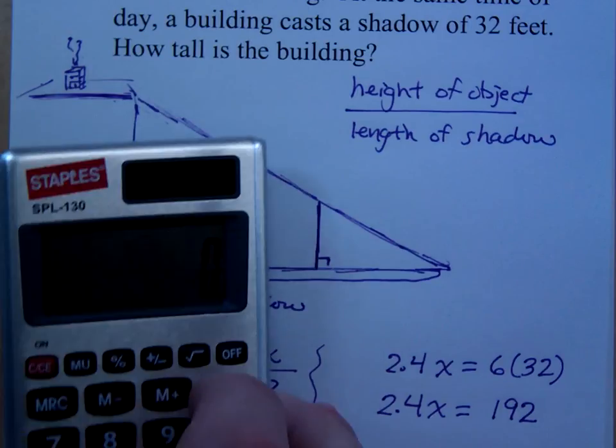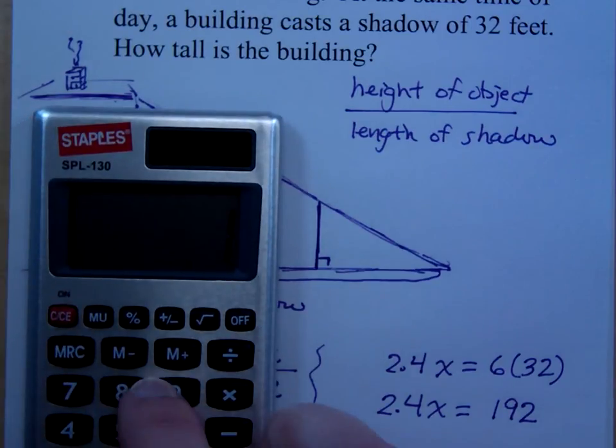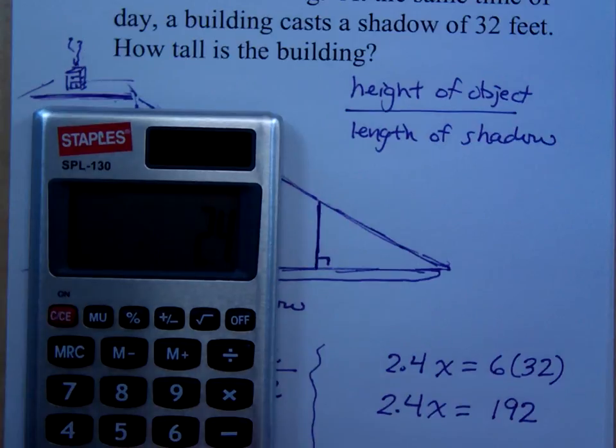And when I'm going to do that, when I do the math here, so 192 divided by 2.4, I get 80. So show the work, we divide by 2.4, x is equal to 80.